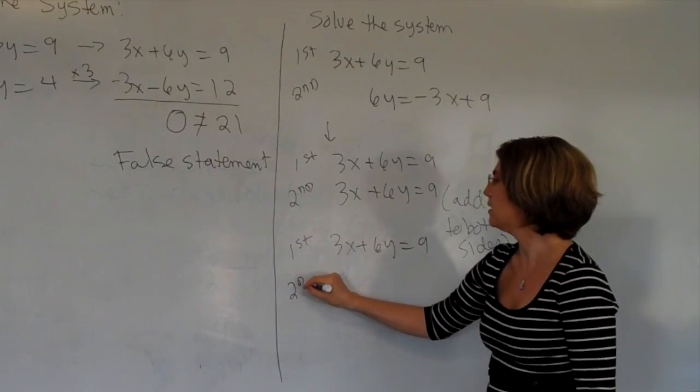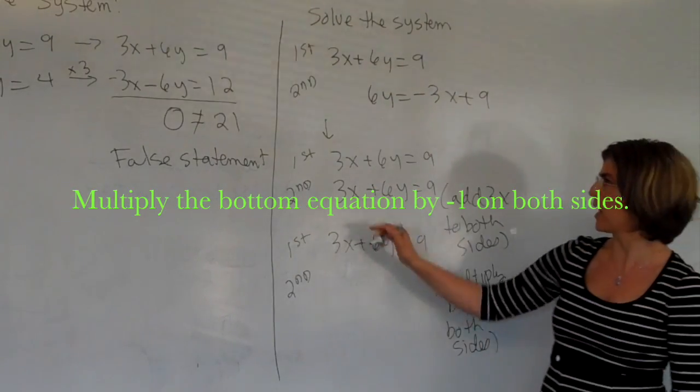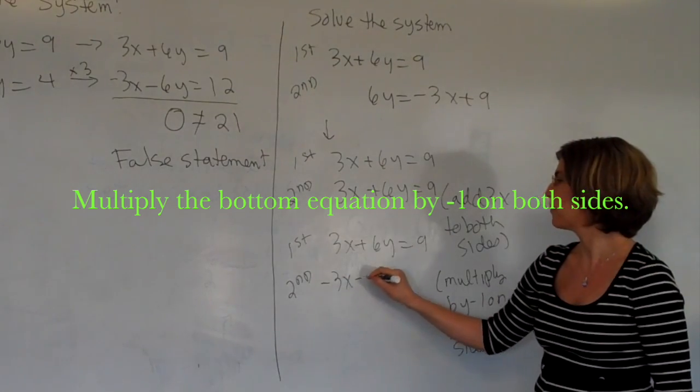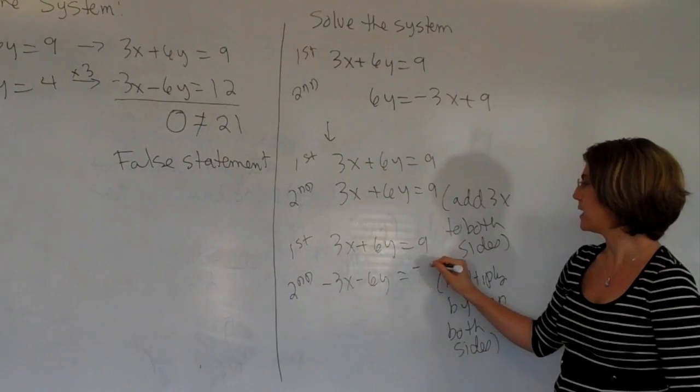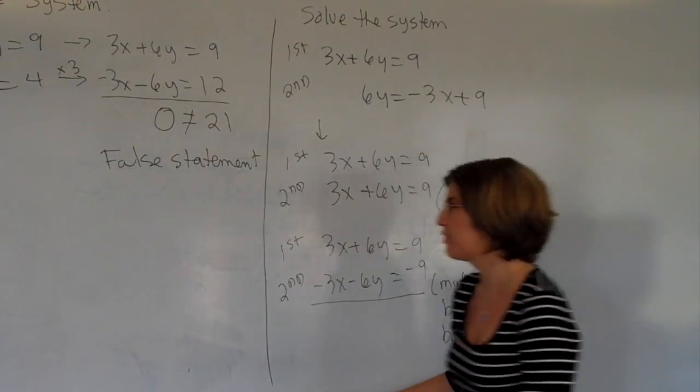And my second one, so when I do that, I get minus 3x minus 6y, copy down my equals, minus 9. And look what happens when I add those up.